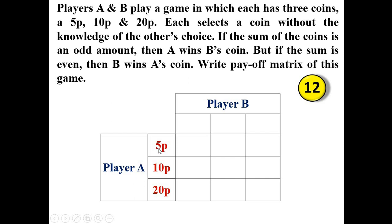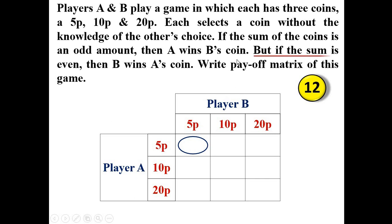For player A, the coin can be 5 paise, 10 paise, or 20 paise; similarly for player B. Now let's find the value for the first cell of the payoff matrix. This corresponds to player A choosing 5 paise and player B also choosing 5 paise. The sum is 5 + 5 = 10 paise.